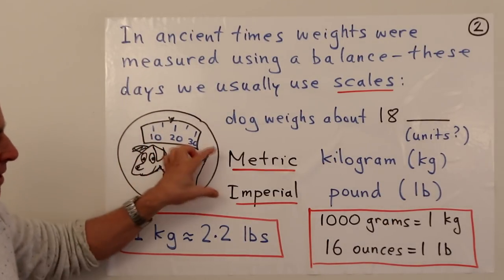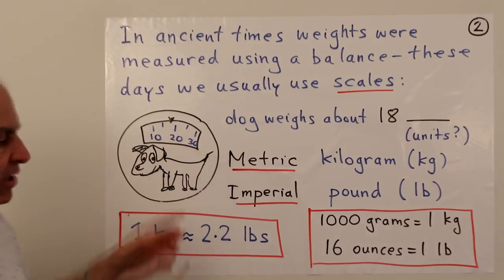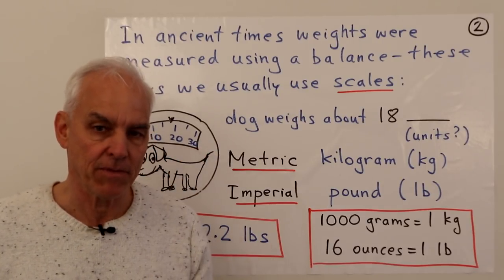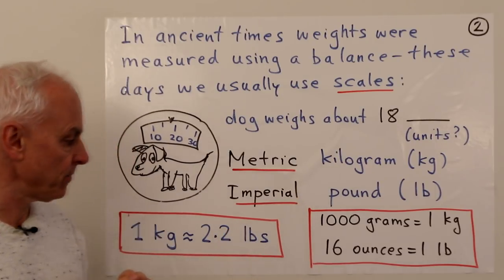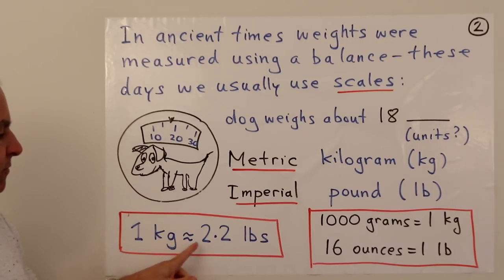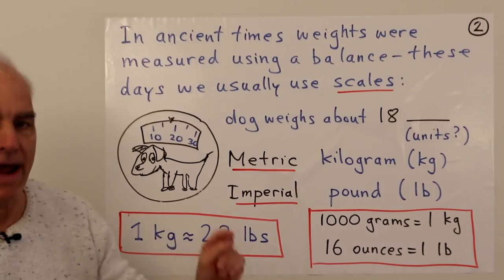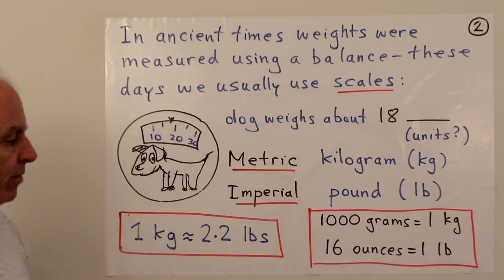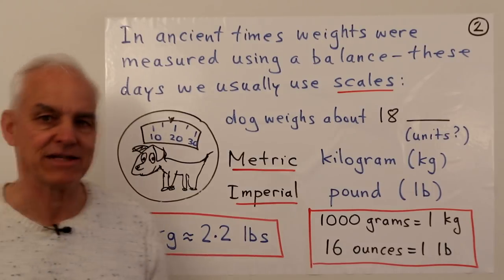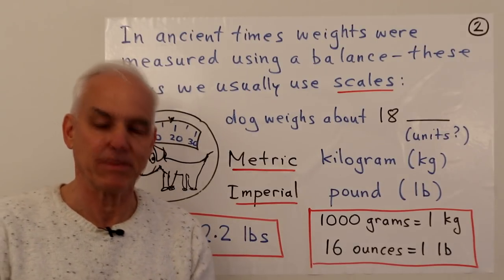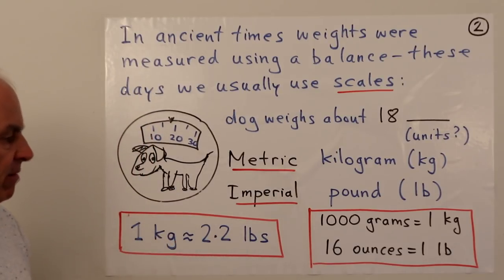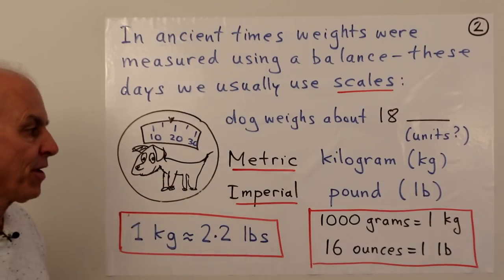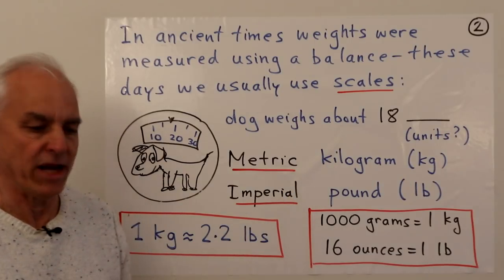There is a relationship between these two. The kilogram is actually heavier than the pound — in fact, a little bit more than twice the weight of a pound. One kilogram is about 2.2 pounds. Children who are learning mathematics don't necessarily know decimals at this stage, but roughly, a kilogram is twice the weight of a pound.